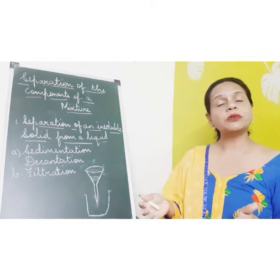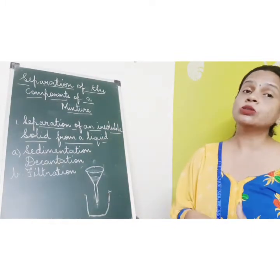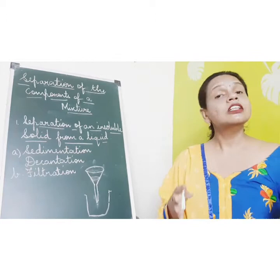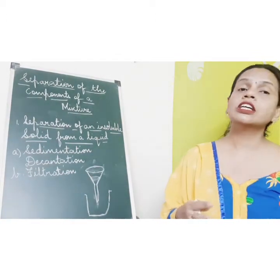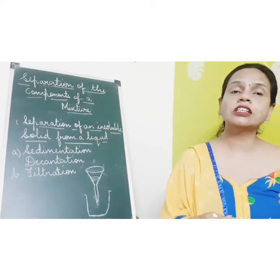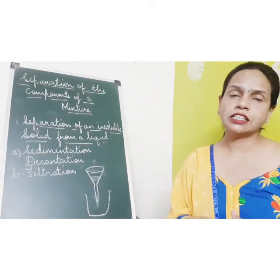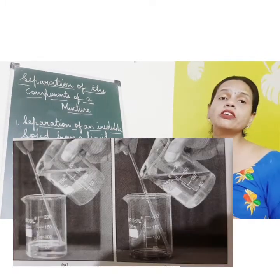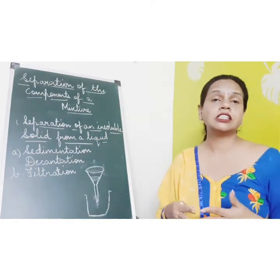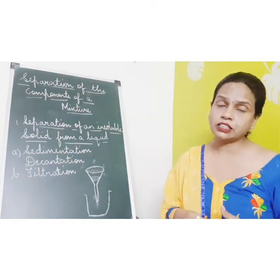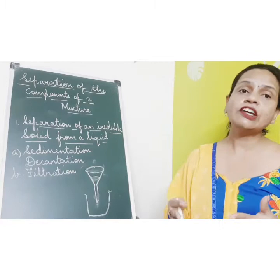The supernatant liquid can be slowly poured into another container. This slow pouring of the supernatant liquid into another container is called decantation. Sometimes the impurities are not removed by sedimentation and decantation, so it can be followed by filtration.